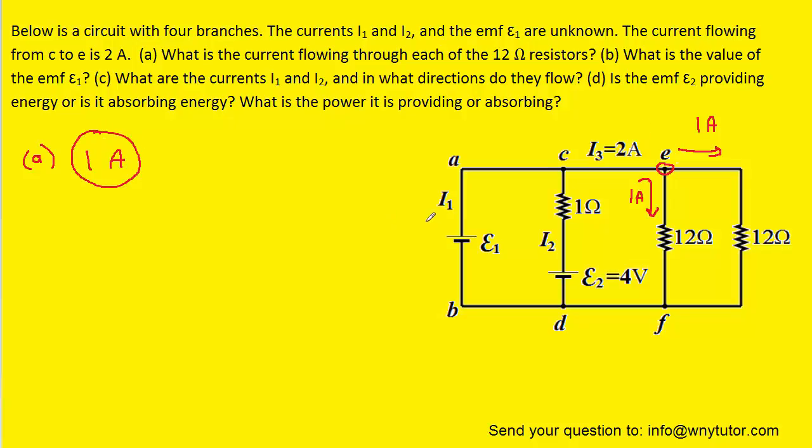On to part B, which asks what is the value of the EMF epsilon 1. In order to calculate or determine this EMF of the battery, we can use the so-called loop rule. To use that rule, we pick an arbitrary starting point and move in a clockwise fashion around the outside of the circuit. We might be able to solve this by choosing a different loop, but it turns out that this loop will work just fine.